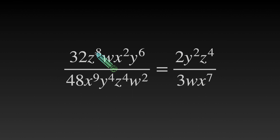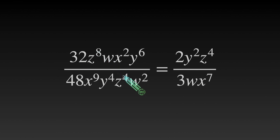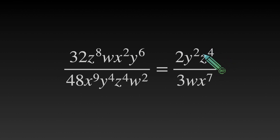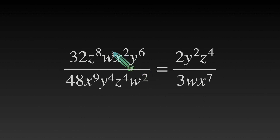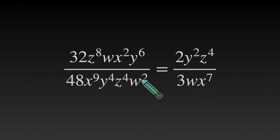Order does not matter — let's start with our z's. We have z to the 8th at the top and z to the 4th at the bottom. Subtracting exponents, 8 minus 4 gives us 4, so we have z to the 4th power in the numerator because we had more z's up top. Now let's look at our w's: w to the first and w squared. 2 minus 1 gives us w to the understood first at the bottom because we had more w's at the bottom.